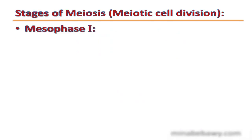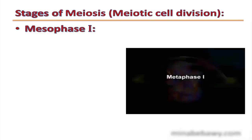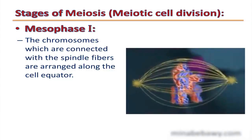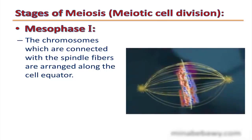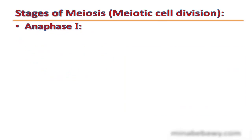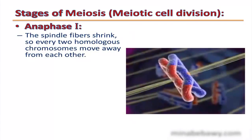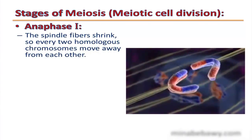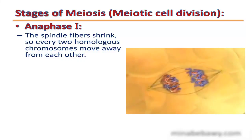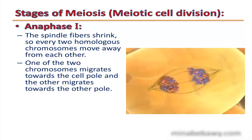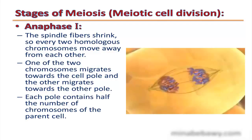The second phase is metaphase 1. In metaphase 1, chromosomes which are connected to the spindle fibers are arranged along the cell equator. The third phase is anaphase 1. In anaphase 1, the spindle fibers shrink, so every two homologous chromosomes move away from each other — one migrates toward one pole of the cell and the other migrates toward the opposite pole.